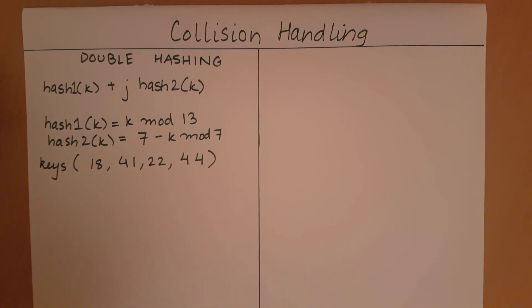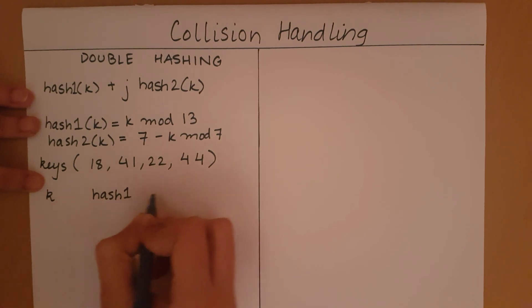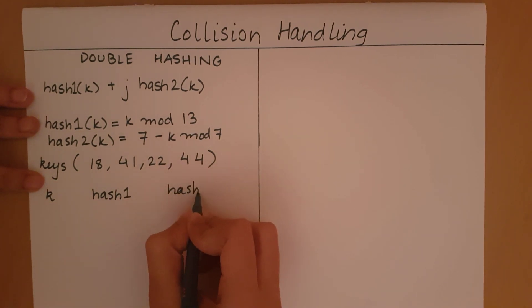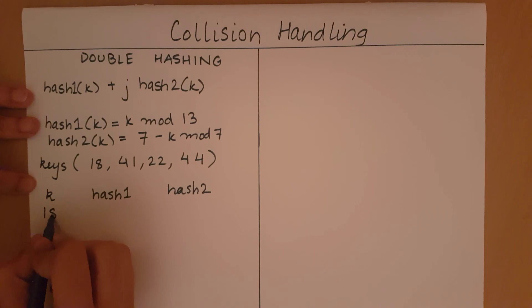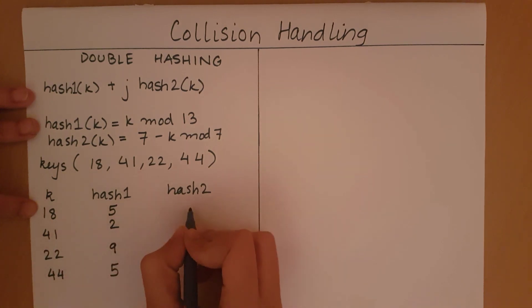Let's see what hash1 and hash2 are going to be. Let me write the key here, then hash1 and hash2. The keys are 18, then 41, then 22, then 44. Hash1 will be 5, 2, 9, 5. Hash2 is going to be 3, 1, 6, and 5.